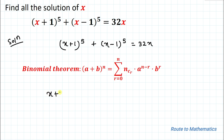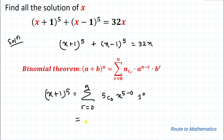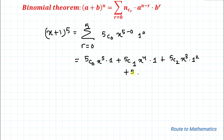Let's first expand (x+1)^5. We write the summation from r=0 to 5: 5C0·x^5·1^0 + 5C1·x^4·1^1 + 5C2·x^3·1^2 + 5C3·x^2·1^3 + 5C4·x^1·1^4 + 5C5·x^0·1^5.